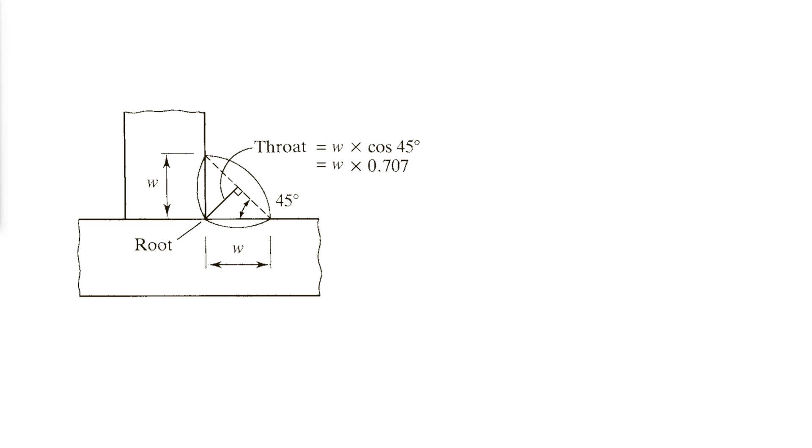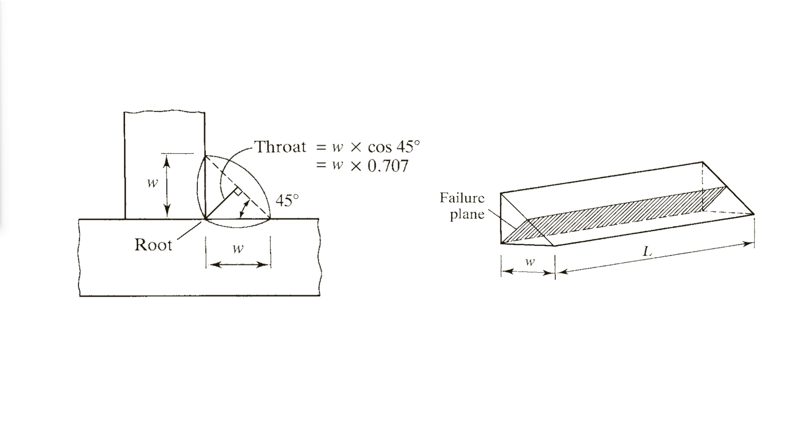Although a length of weld can be loaded in any direction in shear, compression or tension, a fillet weld is weakest in shear and is always assumed to fail in this mode. Specifically, failure is assumed to occur in shear on a plane through the throat of the weld.